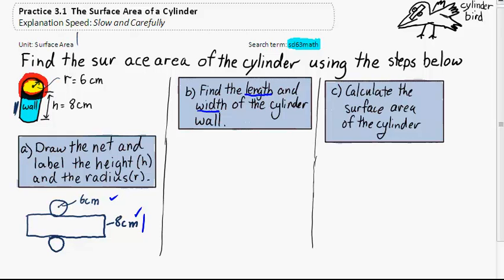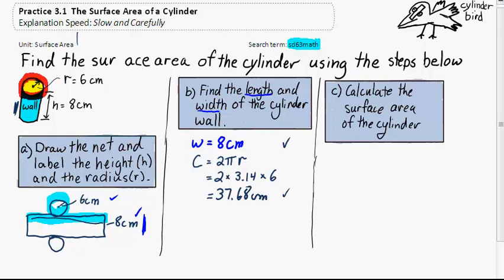In part B, to find the length and width of that wall, we already know the width or the height is 8 cm. The length of it is just the same as the distance around the circle, and that is circumference, 2 pi r, which is 2 times approximately 3.14 times the radius, which is 6. Multiplying those all together gives us 37.68 cm. And so there we have the length and the width.